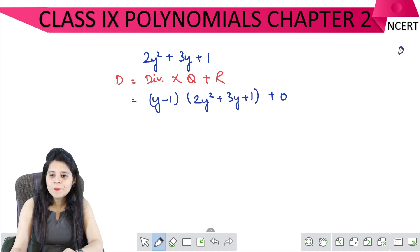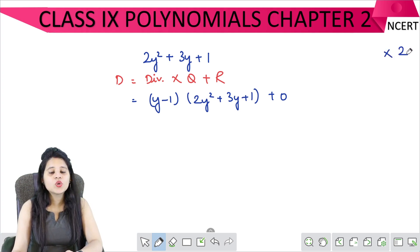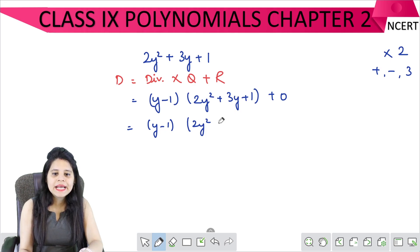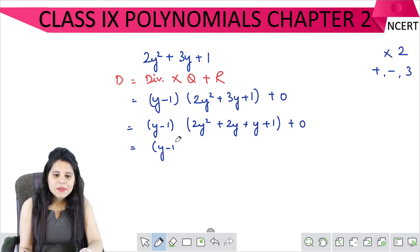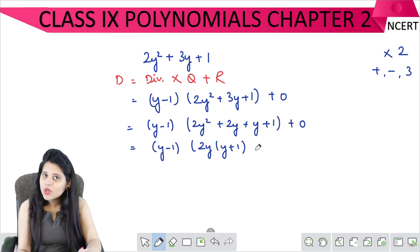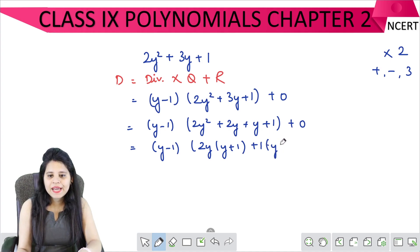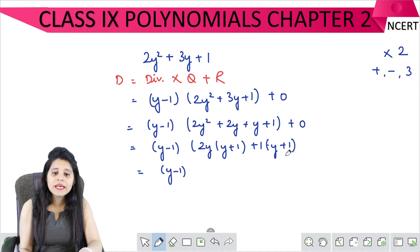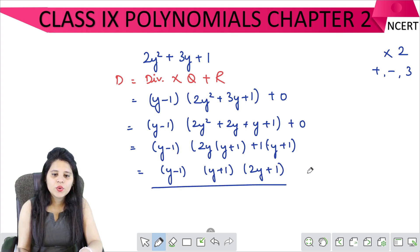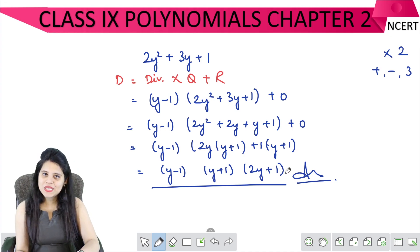Now here we do middle term split. 2 times 1 is 2. The factors give us 2y squared plus 2y plus y plus 1. So y plus 1 is common: y plus 1, and here we have 2y and here we have 1. So this is our answer: y minus 1, y plus 1, and 2y plus 1 is the answer.